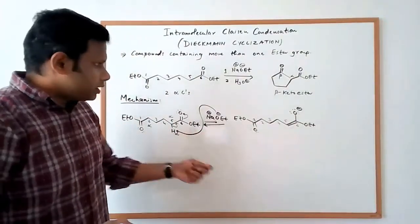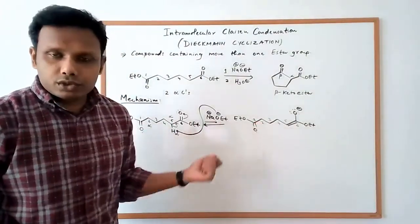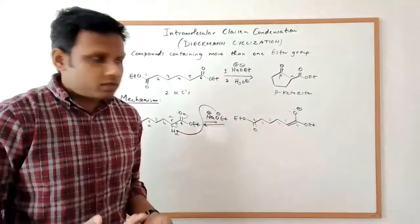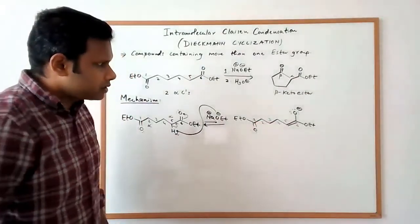Now if we made the enolate at carbon number 2, that would give us the same result over here. So we make this enolate.